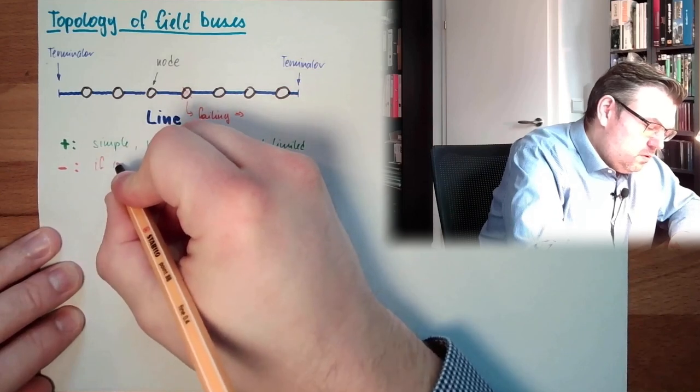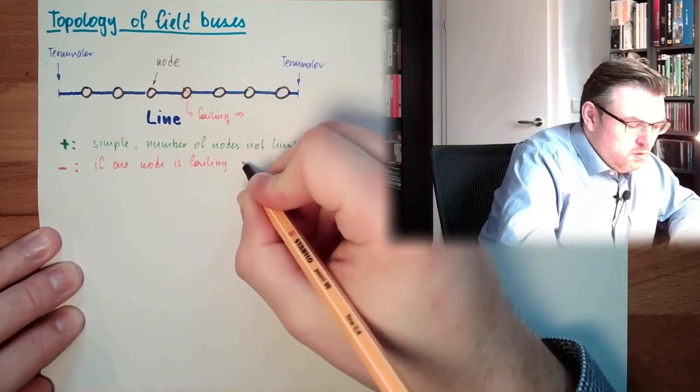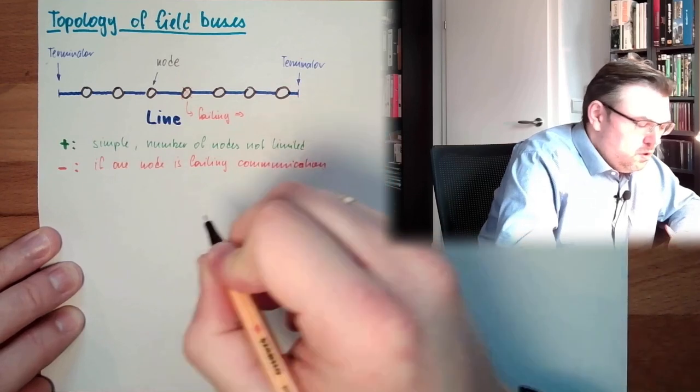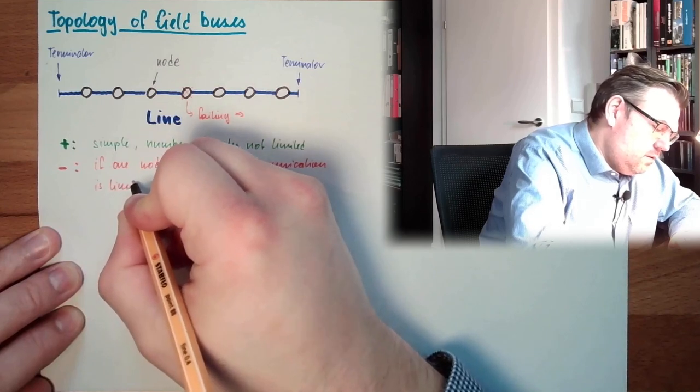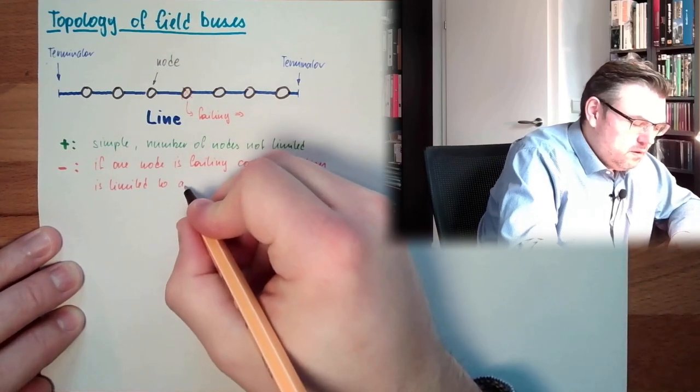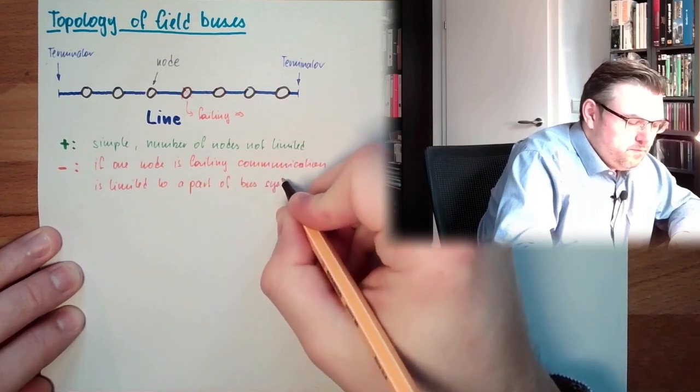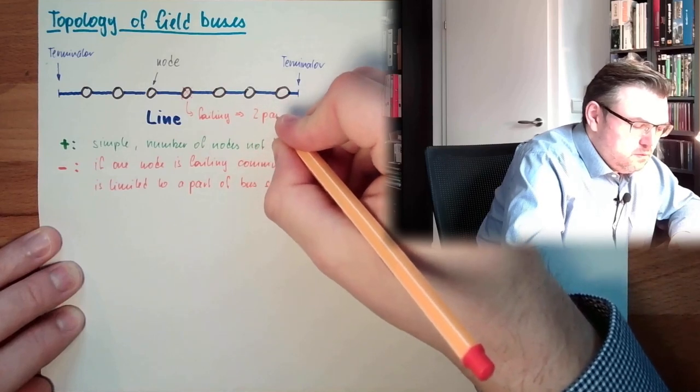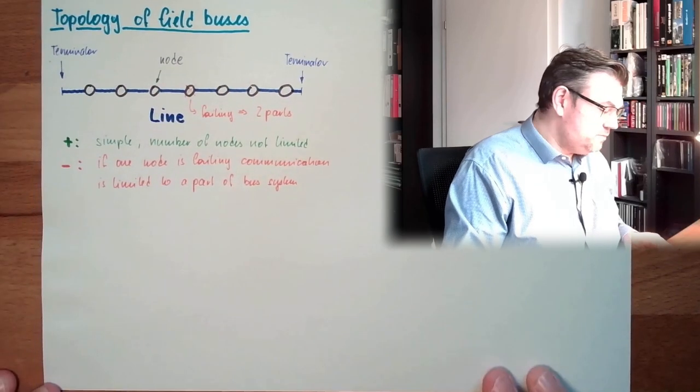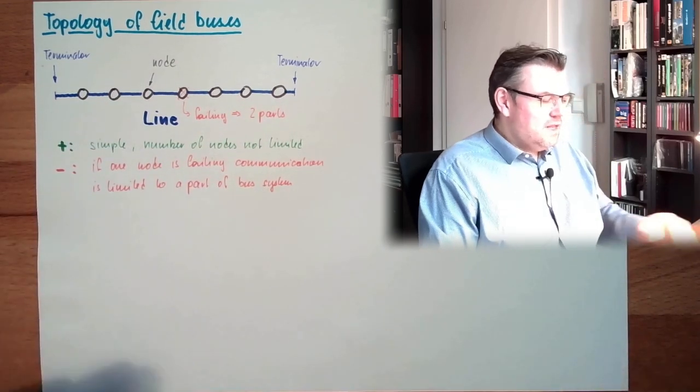If one node is failing, communication is limited to a part of the bus system. Two parts. Here, if this one is failing, we divide this into parts. And this node can no longer communicate with this node. So, this is the line topology.